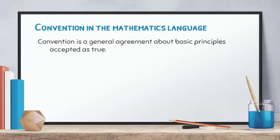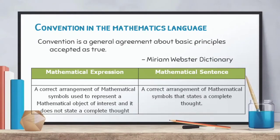Now let's go to convention in mathematical language. Convention is a general agreement about basic principles accepted as true, according to Merriam-Webster. In mathematical language, it is the correct way of arranging symbols in our expressions or sentences. If the symbols convey a complete thought it is a mathematical sentence; otherwise it is a mathematical expression. Convention is the correct arrangement of mathematical symbols used to represent mathematical objects of interest.